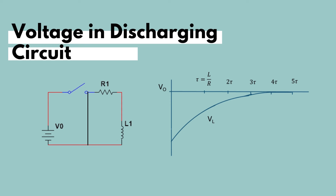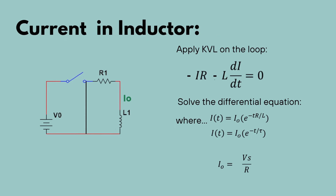The time it takes for an inductor to fully discharge is about five time constants. We can also describe the behavior of current in a discharging circuit as follows. Applying KVL onto the loop, we get −I·R₁ − L₁·dI/dt = 0.